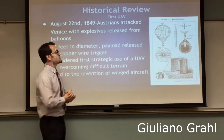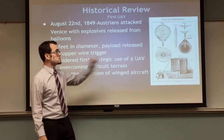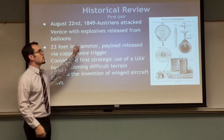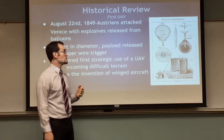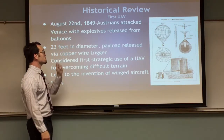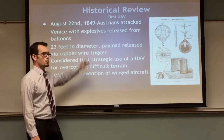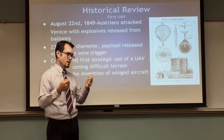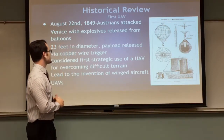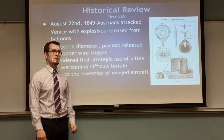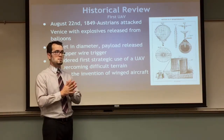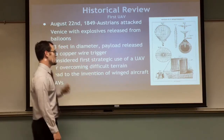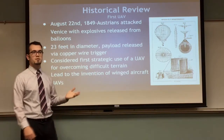Hey everyone. This is a brief historical overview of different models of UAVs. The first UAV wasn't actually a winged vehicle — it was a balloon that had an explosive tied to it. In 1849, the Austrians were trying to attack cities within Italy. The explosives were released from balloons via a wire trigger — a long copper wire extending up to the balloon, with a battery used to connect and detonate. This was considered the first strategic use of the UAV, since the terrain around Venice was very watery with many lagoons. They used this balloon to overcome the range of their artillery, since they could not move their artillery any closer. This eventually led to the invention of the winged UAV.